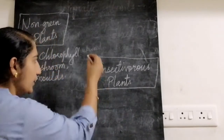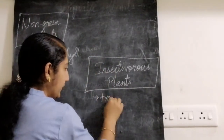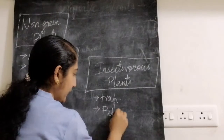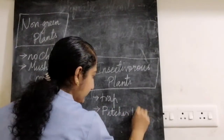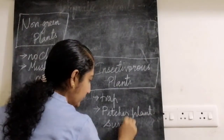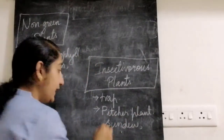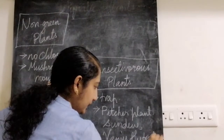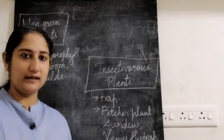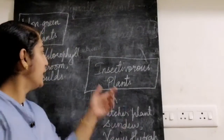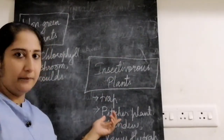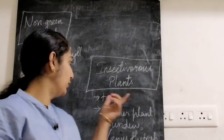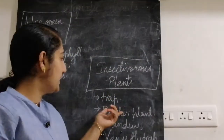These plants trap insects because of their attractive color. The examples of insectivorous plants are: pitcher plant, sundew, and venus flytrap. You have three examples of insectivorous plants — unusual plants that are not like your usual plants.